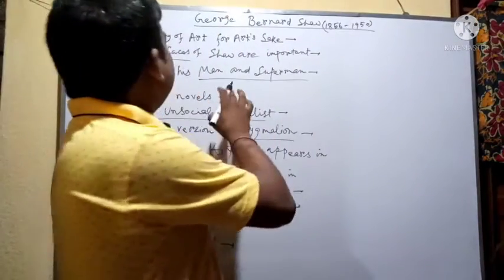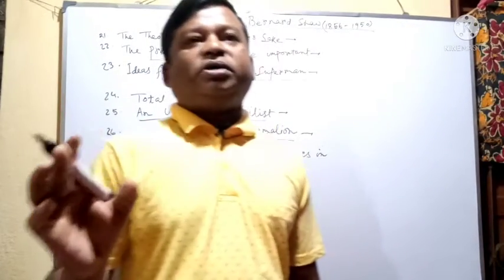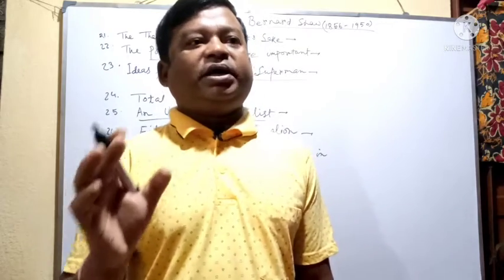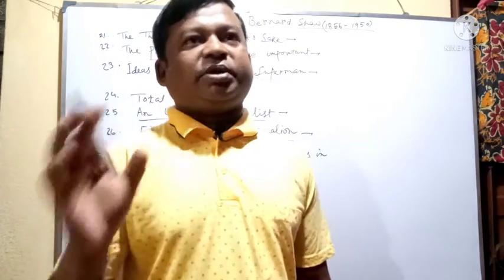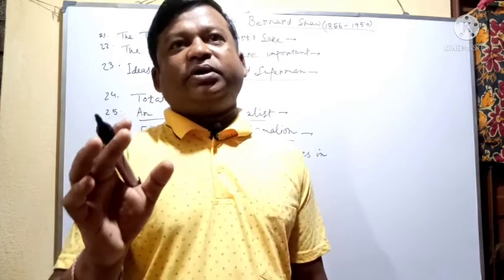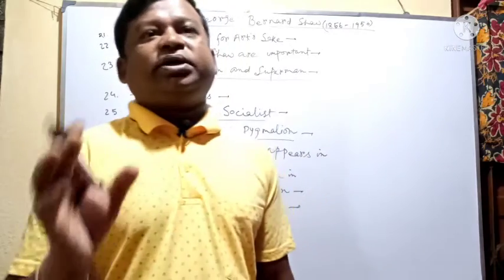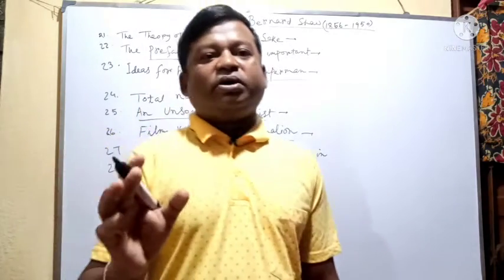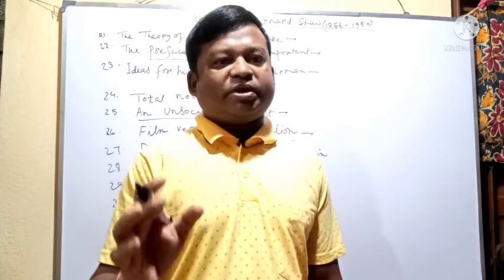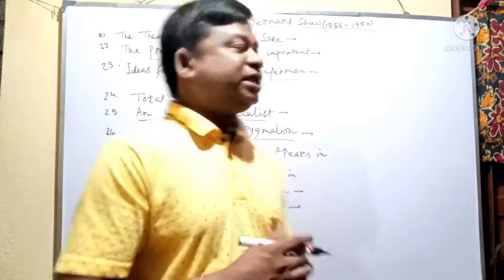From whose philosophical doctrines did George Bernard Shaw draw ideas for his play Man and Superman? Shaw drew his ideas for his play Man and Superman from the philosophical doctrines of Nietzsche.